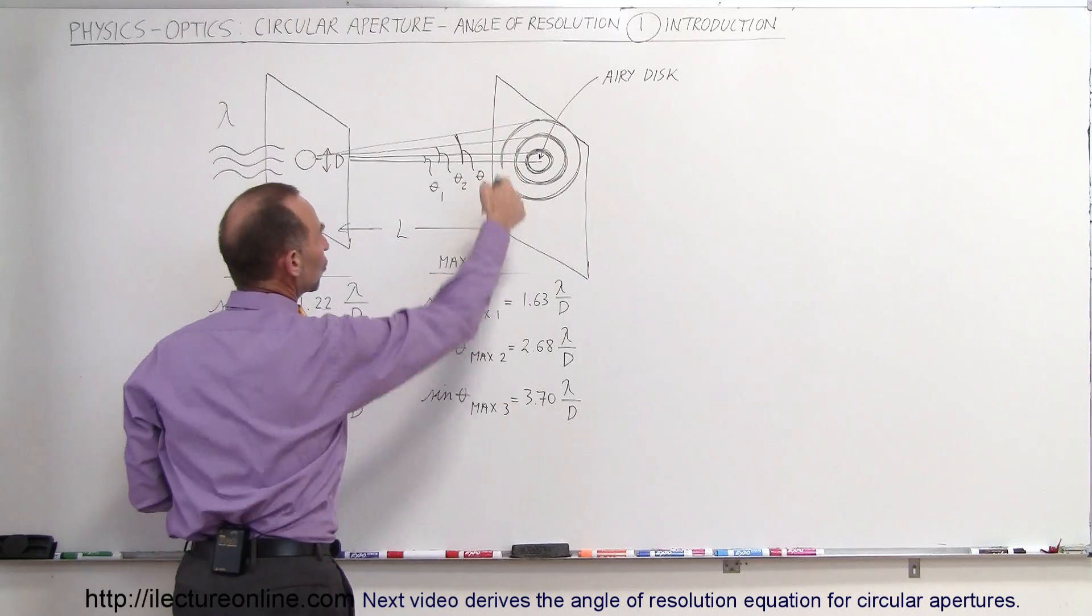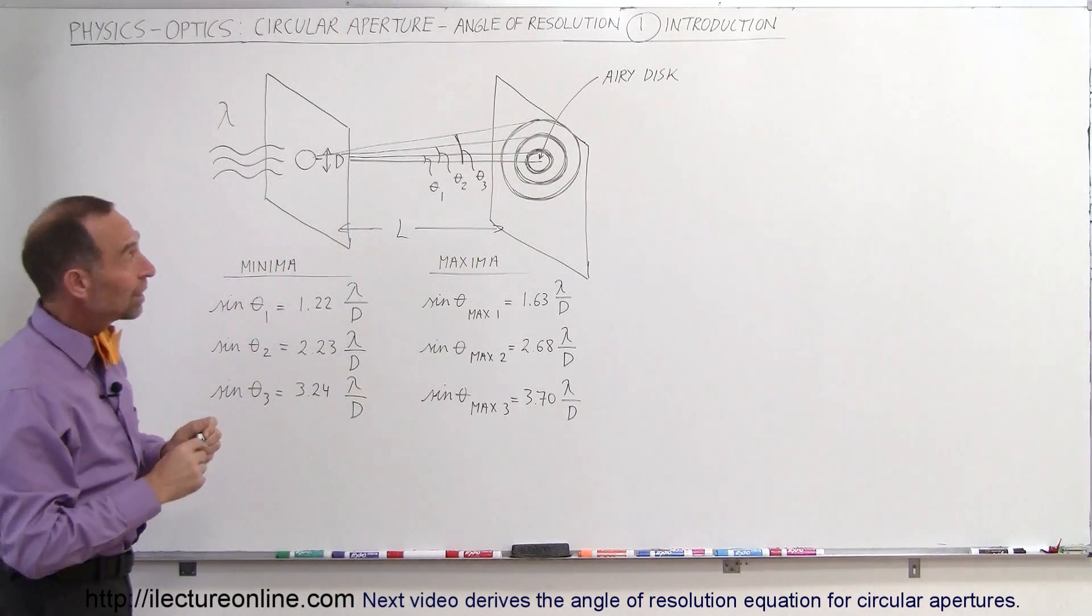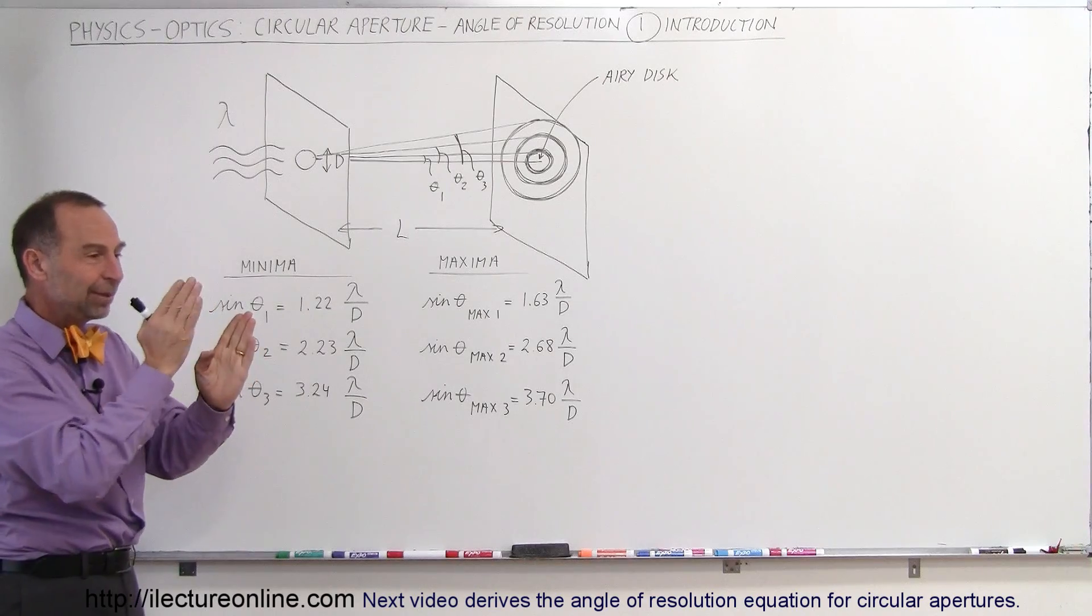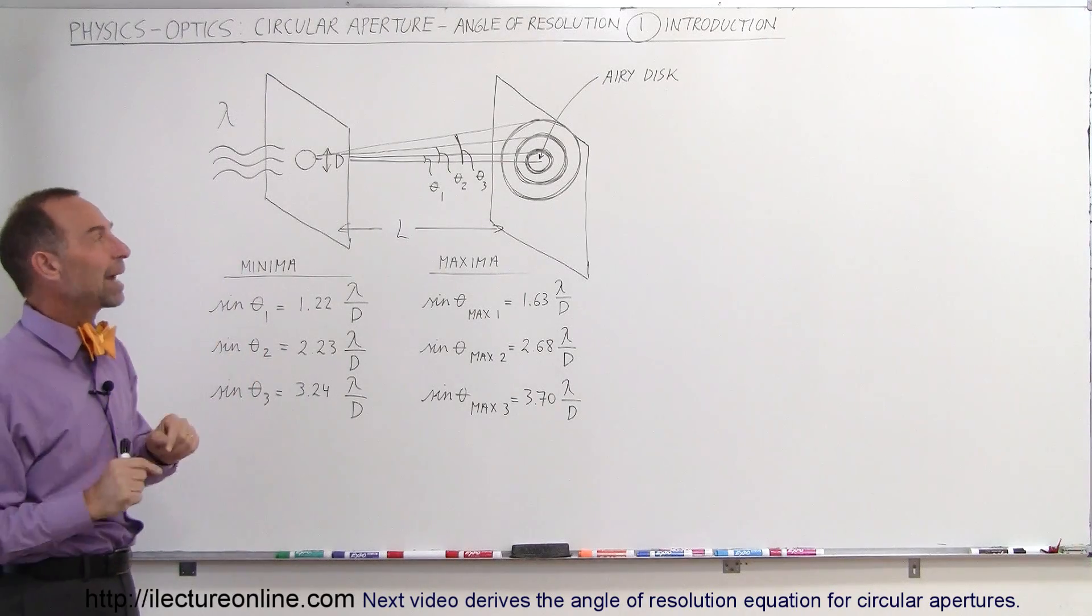Let L represent the distance from the aperture, from the opening to the screen. What happens on the screen is you'll get max and mins, but instead of having them linear, they're going to be circular max and mins.